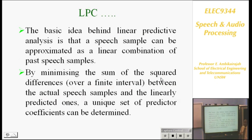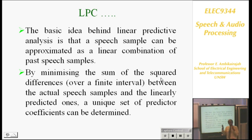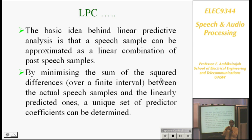The basic idea behind linear prediction: one speech sample can be predicted from the past samples. That's why it's called linearly predictable. You can predict the current sample from past samples. How many past samples you need depends on the number of poles you use. You could use 12-order models, then 12 past samples. We know the current sample, we know the past samples, we predict, subtract those two, and get an error. By minimizing that error, we can calculate the filter coefficients.